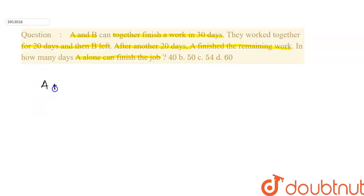So, we can write A plus B, they finish the work in 30 days. We can say that the total work is one unit. So, we can write the total work as 30 units.